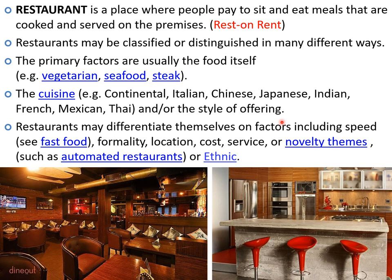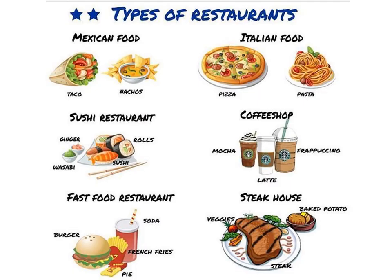Restaurants may be self-service or full-service. They may also differentiate themselves on factors including speed of service — like fast food — formality, location, cost, service, or novelty themes such as automated restaurants or ethnic restaurants where traditional ambiance and food is offered. Restaurants may be of different types based on food on offer: Mexican food, Italian food, Japanese or sushi restaurants, coffee shops, fast food restaurants, or steak houses.